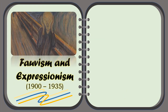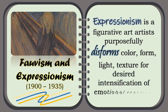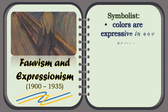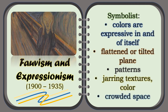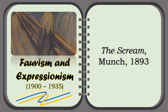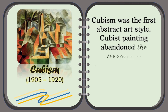The Fauvism and Expressionism. Expressionism is a figurative art where artists purposefully distort color, form, light, and texture for a desired intensification of emotional reaction. Symbolist colors are expressive in and of themselves — flattened or tilted planes, patterns, jarring textures and color, crowded space. For example, The Scream by Munch in 1893. Cubist painting abandoned the tradition of perspective drawing and displayed many views of a subject at one time.